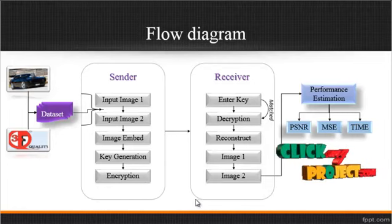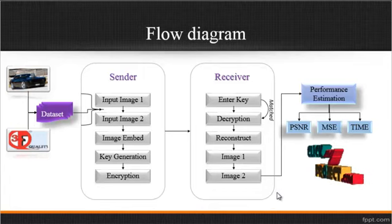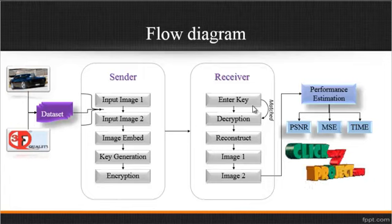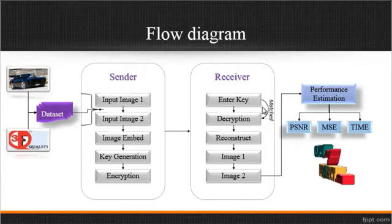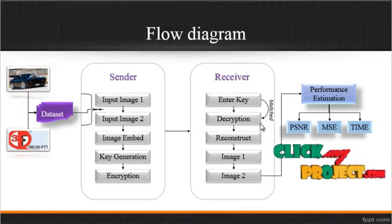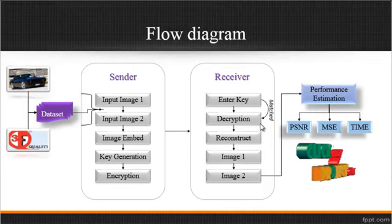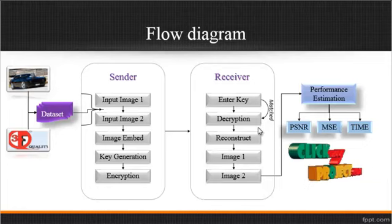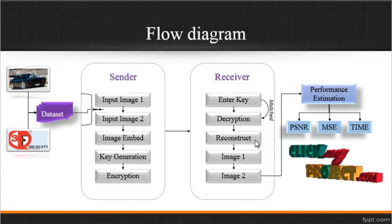After the sender side, we run the receiver side. On the receiver side, we enter the key. If the key matches the previously entered key, decryption will be performed. In this decryption part, we decrypt the image and then reconstruct it. The reconstruction is the inversion of the image embedding process.